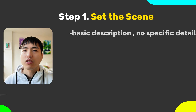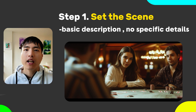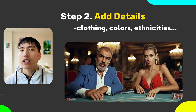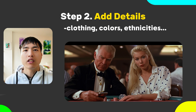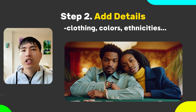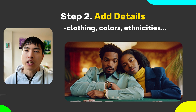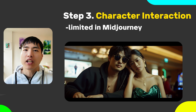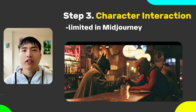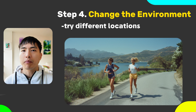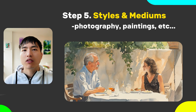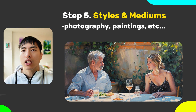Let's review what we've learned. Step 1: Setting the scene — use a basic description of the general image you want to generate without adding in too many details. Step 2: Add in the details — explore different clothing, colors, textures, ethnicities, and age. Midjourney can generate really specific prompts especially for clothing and colors now. Step 3: Character interactions — this is still very limited in Midjourney; I tried to make Batman and Spider-Man punch each other but that just doesn't work. Step 4: Experiment with different locations and backgrounds for your subjects. Step 5: Try out different mediums for your images, like photography or oil paintings, for different visual effects.